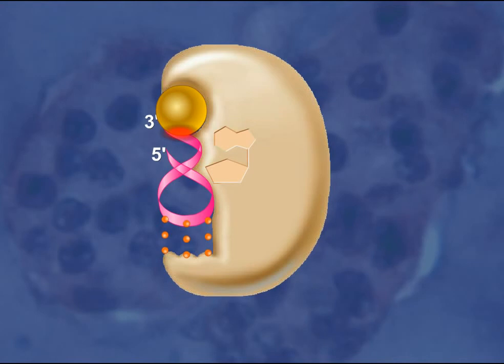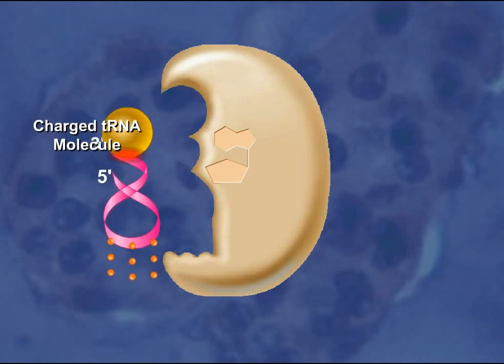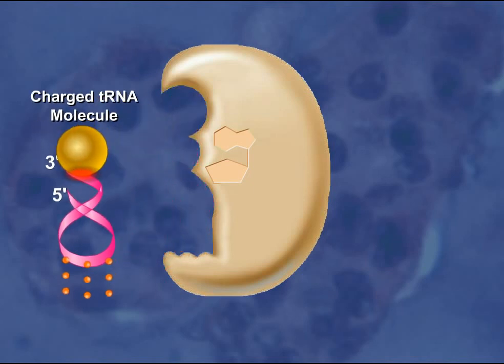The tRNA is now called a charged tRNA molecule. The charged tRNA is then released from the enzyme and is now ready to be used in the process of translation on a ribosome.